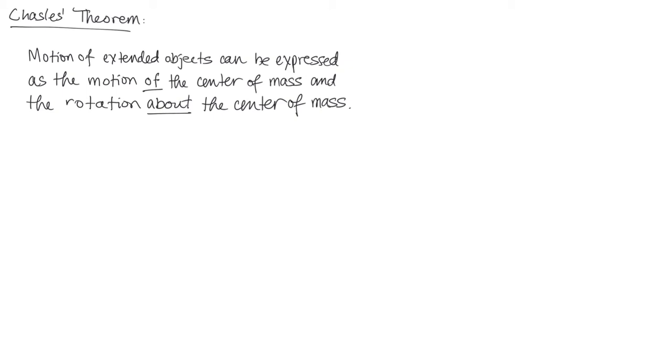Chasles' Theorem says that the motion of an extended object like a hammer or a tennis racket, anything that's not a point particle, can be expressed completely as the combination of two different motions: the motion of the center of mass and the motion of the rest of the body in rotation about that center of mass. That's pretty amazing, right?